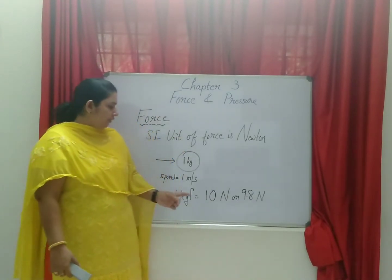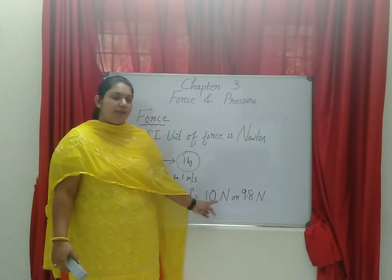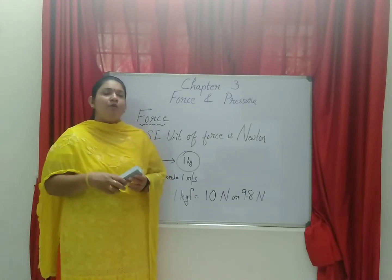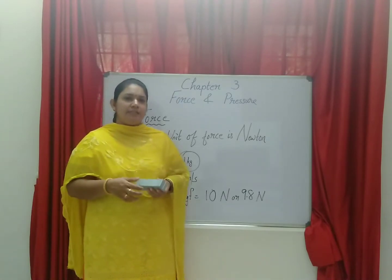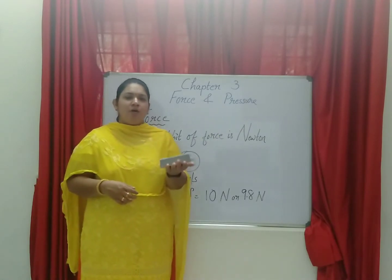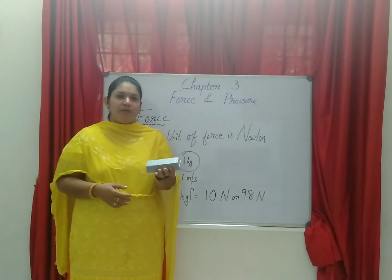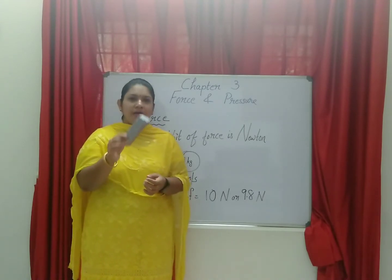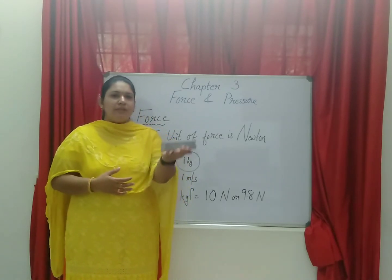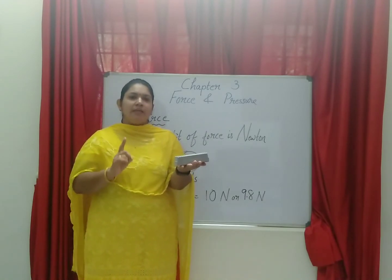Or we can compare it with Newton as 1 KGF is equal to 10 Newton, if you are taking the acceleration due to gravity as 10. So how will you define this KGF? 1 KGF is defined as the force exerted to hold a mass of 100 grams. Suppose this object is 100 grams. How much force I am exerting to hold this 100 gram mass is termed as 1 KGF.